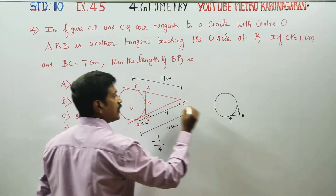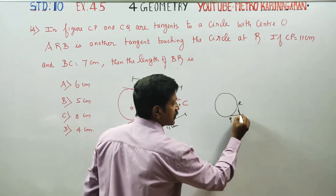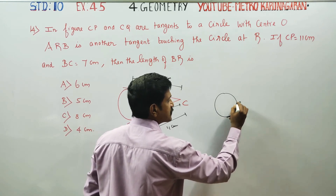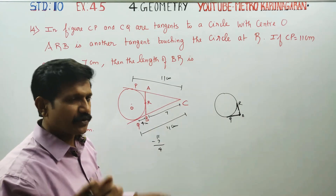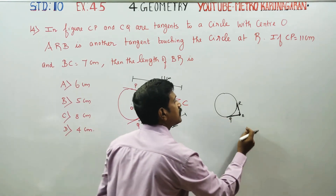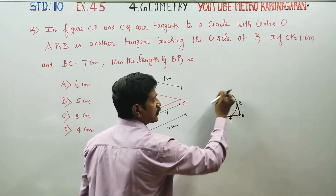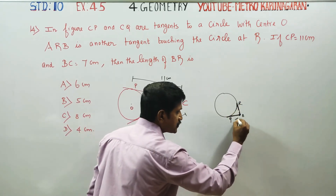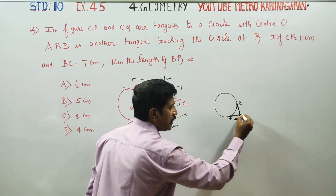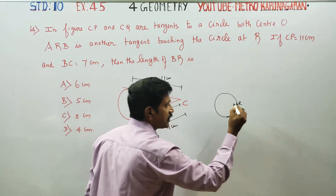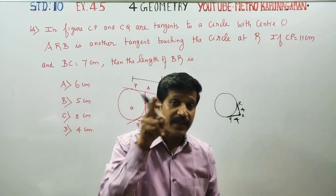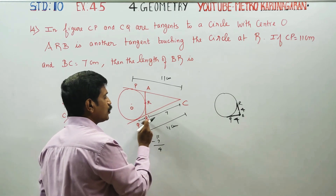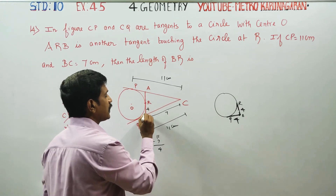Two tangents are drawn from an external point. From external point B, R and Q are drawn. Two tangents drawn from an external point are of equal length — CP and CQ are equal length. BR and QB are equal. Already QB answer is 4, so RB answer is also 4.